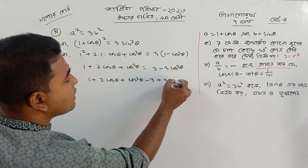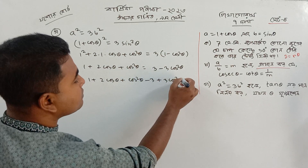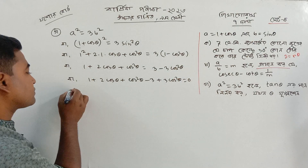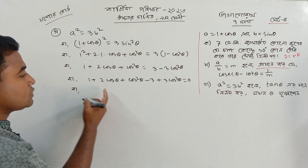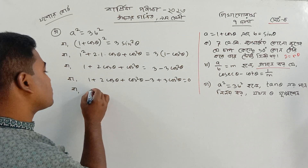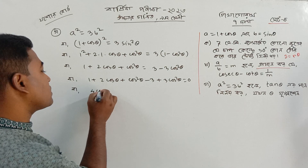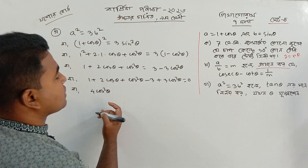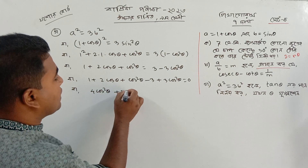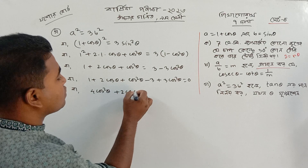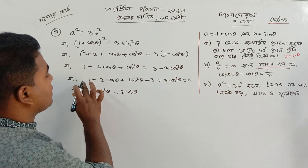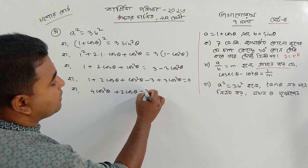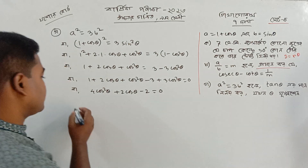As A square equal to 0. Cos square theta — 4 cos square theta plus 2 cos theta plus 1 minus 3. So, 1 minus 2 equal to 0.